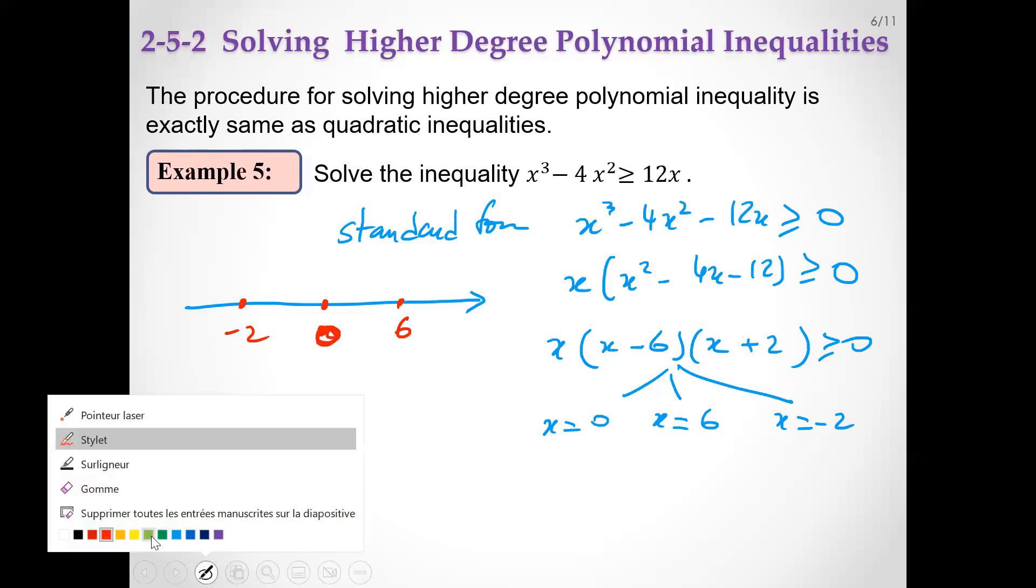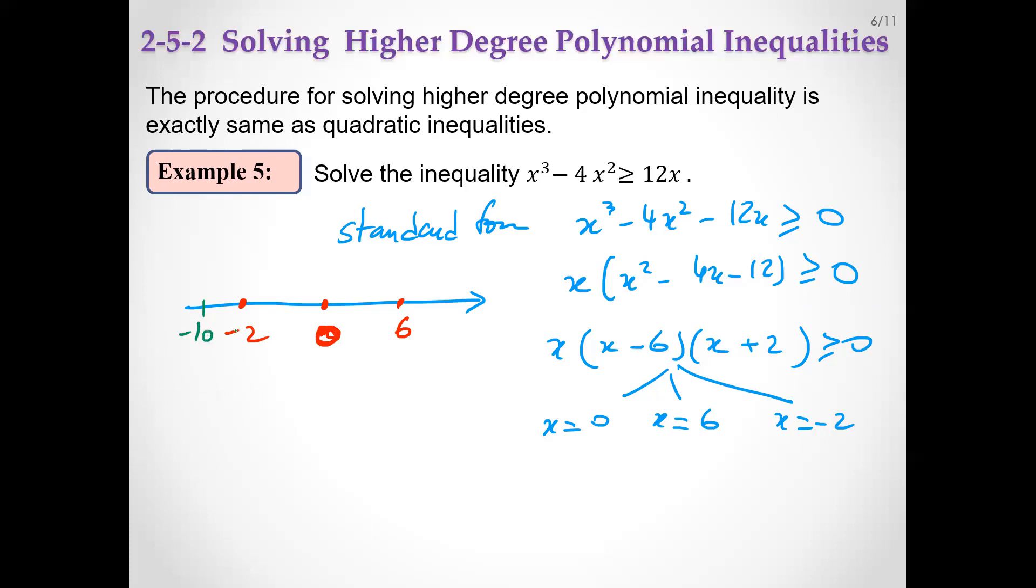Test points. For example, minus 10, minus 1, 1, and 10. For x equals 10, we have 1000 minus 400 minus 120, so it's plus. For x = 1: 1 minus 4 minus 12, it's minus. For minus 1: minus 1 minus 4 minus 5 plus 12, plus. For minus 10, it's minus.